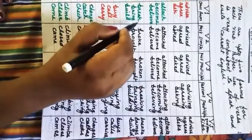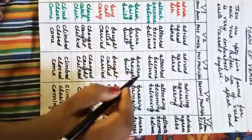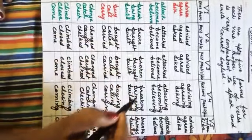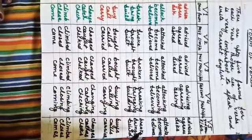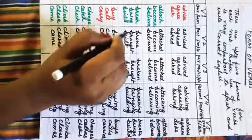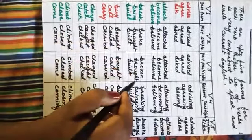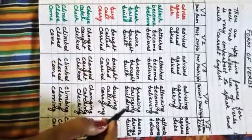Break — meaning 'todna' (to break). Second form: broke. Third form: broken. Fourth form: breaking. Fifth form: breaks. Bring — meaning 'lana' (to bring). Second form: brought. Third form: brought. Fourth form: bringing. Fifth form: brings.